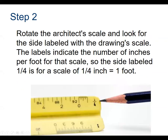You want to rotate the ruler to find your scale. The architectural ruler has three sides and each side has two scales you can pick from, and on the other end of each side there's another scale as well. So you've got to look for the markings on the side for the scale that you're looking for. In this case, the drawing we just looked at is in quarter inch scale, so we need to go to the quarter.